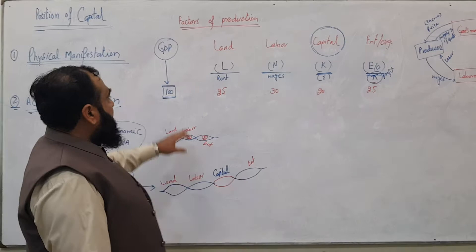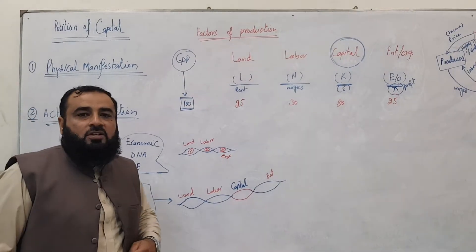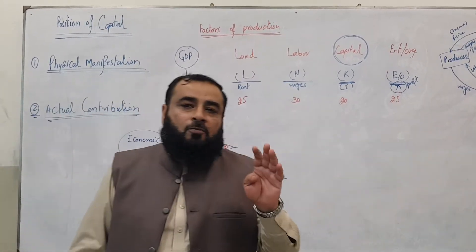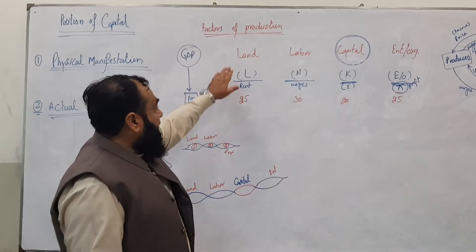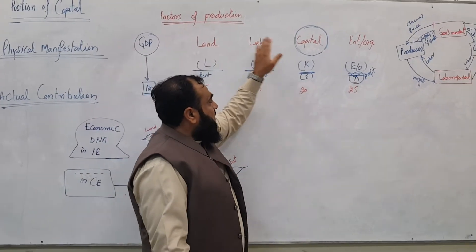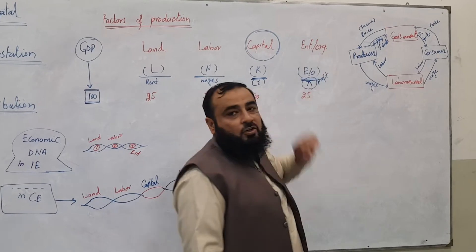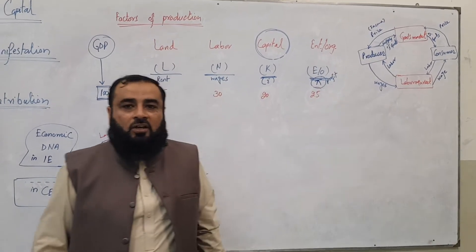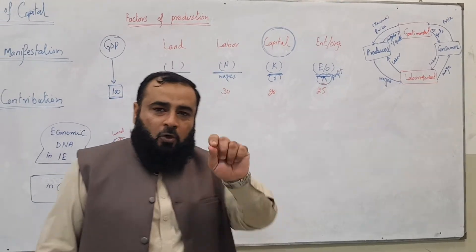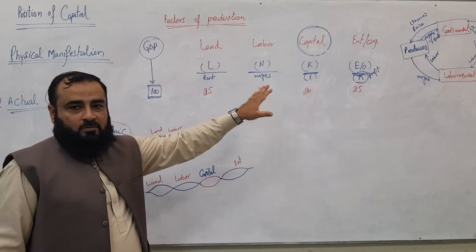Now let's talk about the factors of production. According to conventional economics, there are four factors of production: land, labor, capital, and entrepreneur — also known as organization. Before going to explain these factors of production, let's discuss two important concepts.